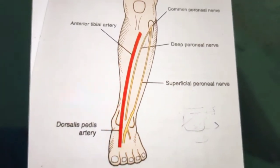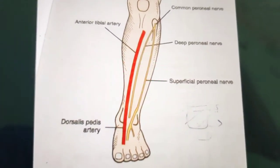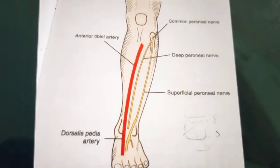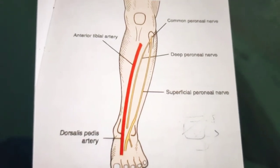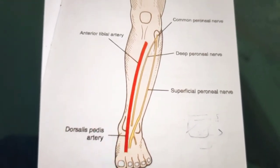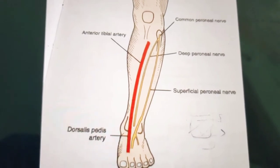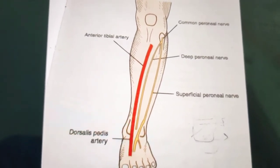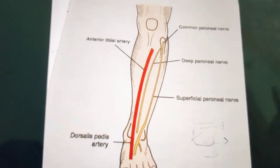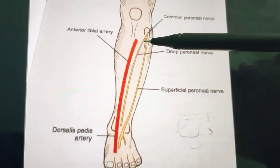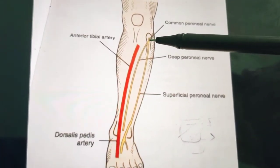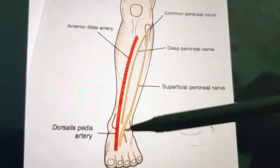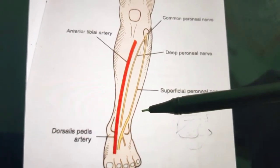The superficial peroneal nerve is the main nerve of the lateral compartment of the leg because it supplies all the lateral compartment muscles — that is peroneus longus and peroneus brevis. Its origin is from a small terminal branch of the common peroneal nerve. At the neck of the fibula, the common peroneal nerve divides into the deep peroneal nerve and the superficial peroneal nerve.